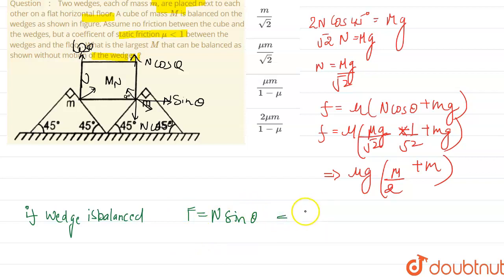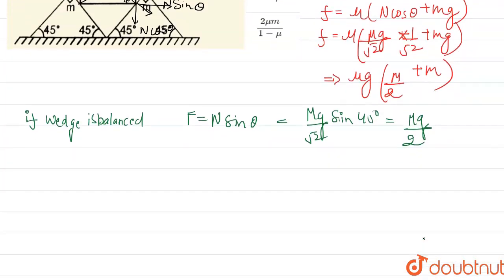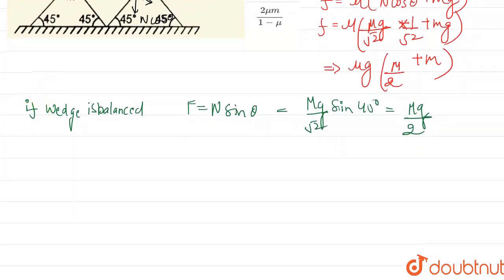f equals n sine theta, and theta is 45 degrees. It will be equal to mg root 2 sine 45 degrees, and this comes up to be mg by 2. Similarly, if you will get this, it is f.